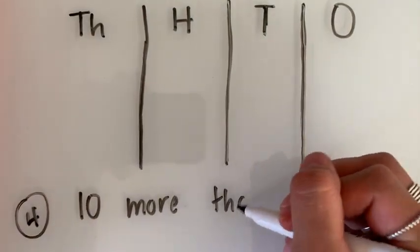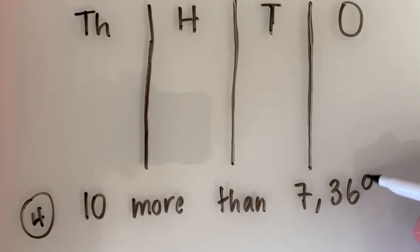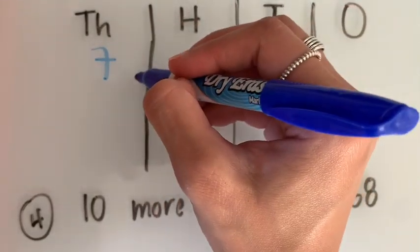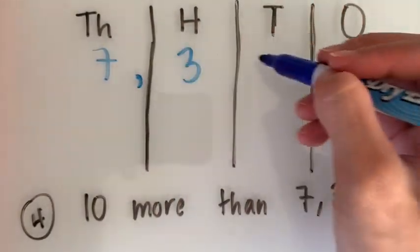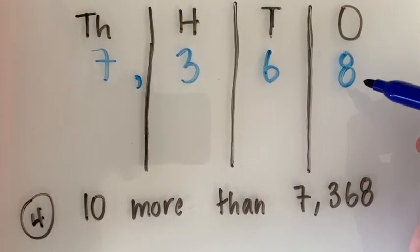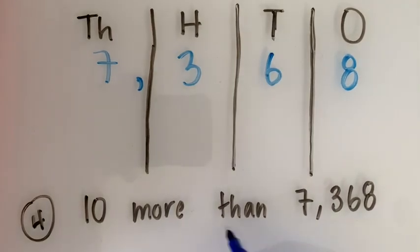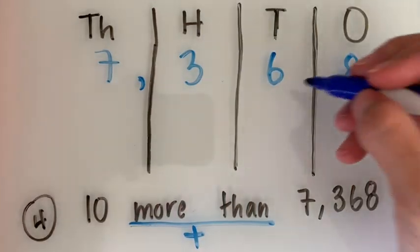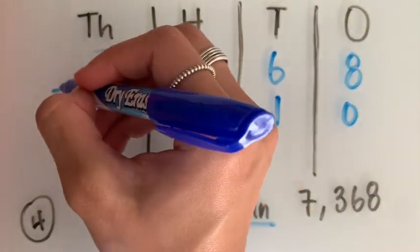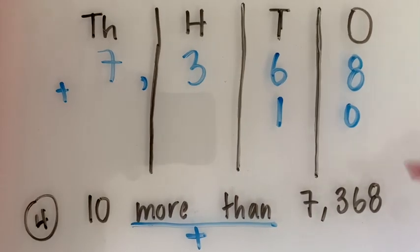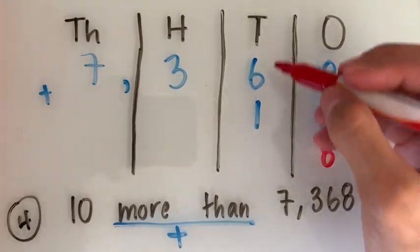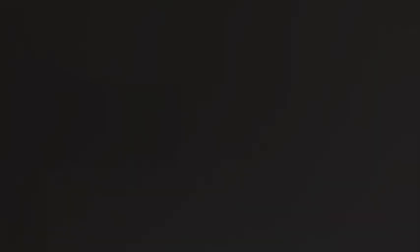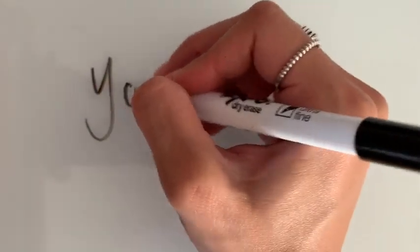On the fourth example, it asks us to find what 10 more than 7,368 is. We're going to start by plotting 7,368 on our place value chart. Once again, more than is addition, so that means we're going to add 10 more to the number already plotted. Our one is in the tens place. Now we are going to add each place and we find that our answer is 7,378.